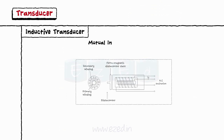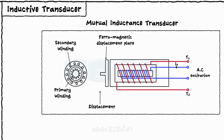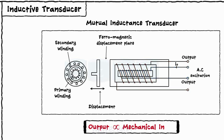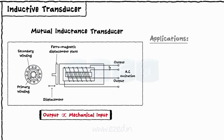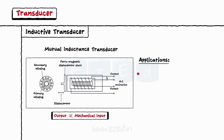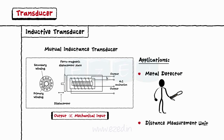In a mutual inductance transducer, we have two different coils. In the first coil, the excitation is generated by an external source of power, and in the second coil, the output is obtained. The output is proportional to the mechanical input. Common examples of inductive transducers are metal detectors, distance measurement, etc.